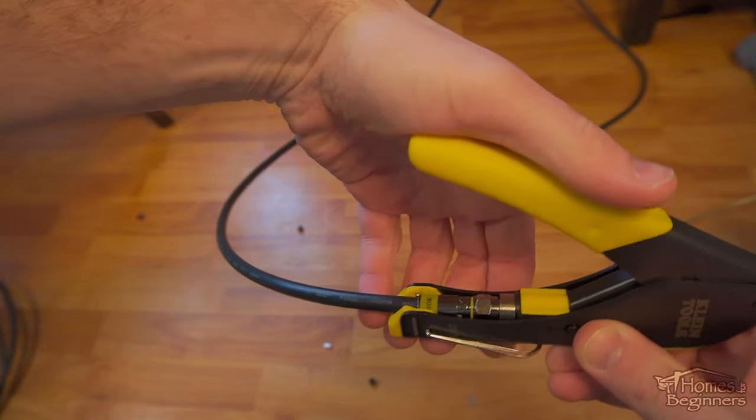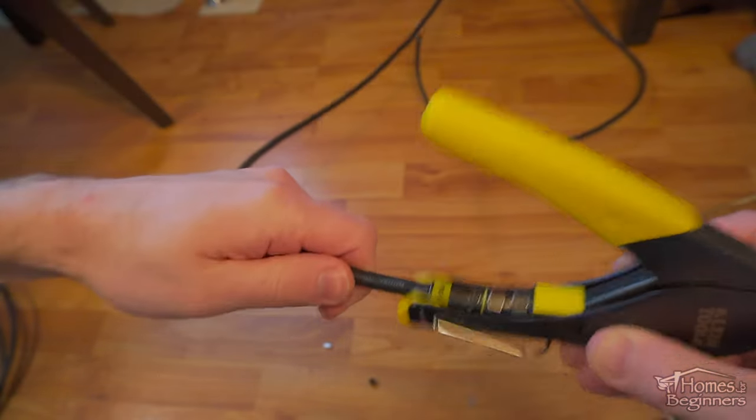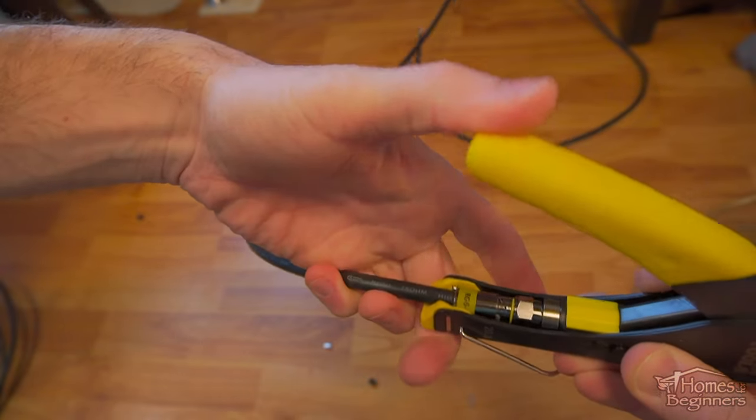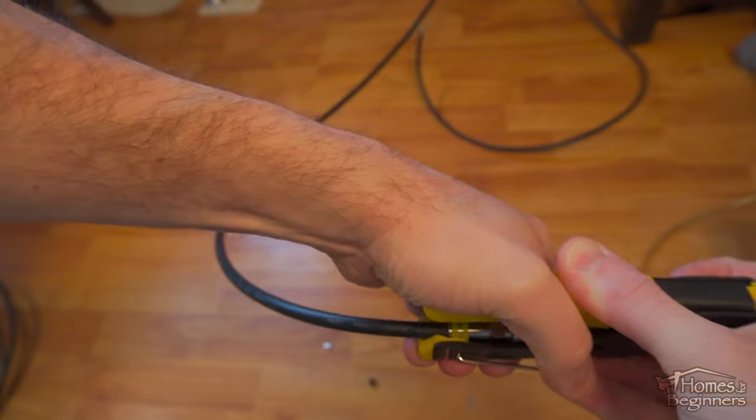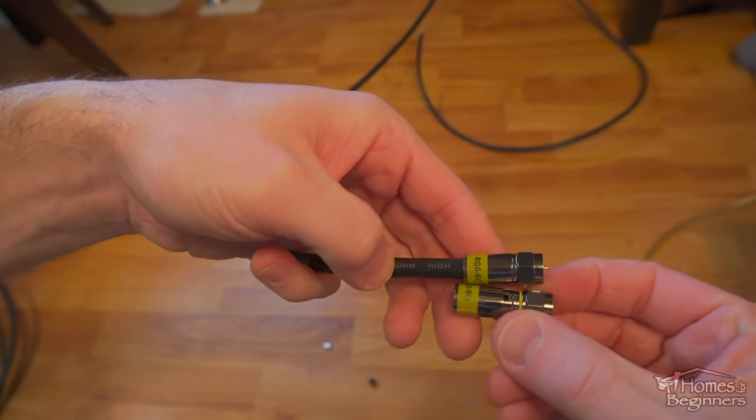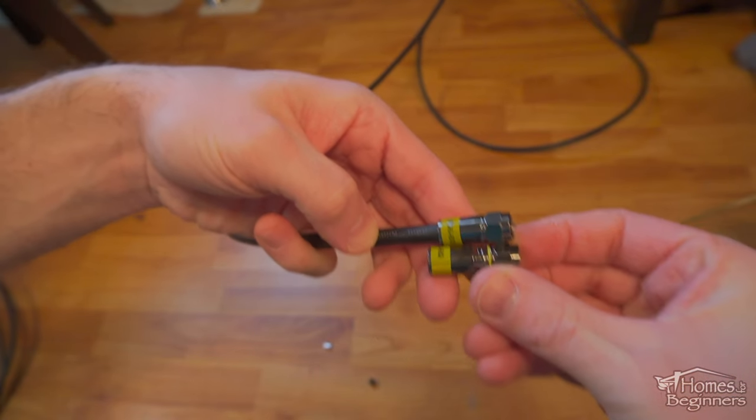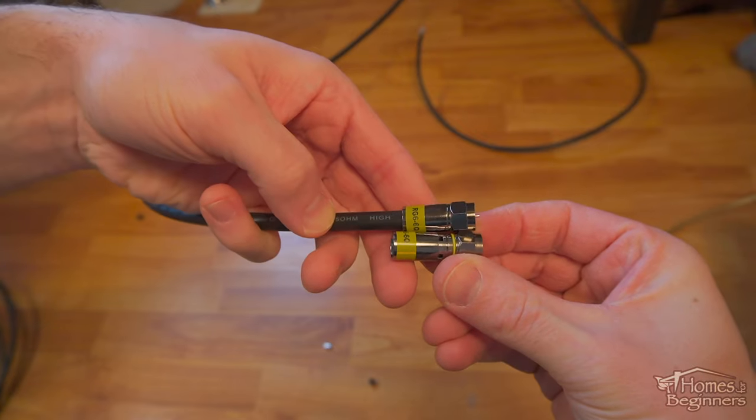Insert the compression connector with the cable and lock it into the plunger. Once it's in place, push down the handle. Make sure that cable is fully seated otherwise you'll have to start over. Once the connector has been compressed, here you can see the difference between the outer sleeve.